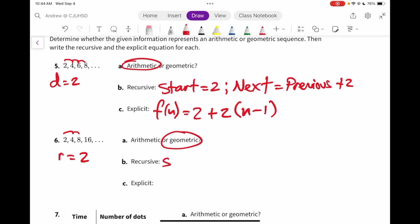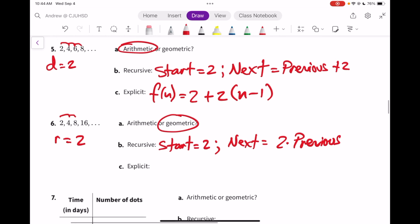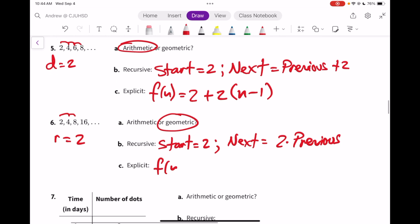The recursive, you want to say where does it start? It starts at 2. And next equals 2 times the previous. The explicit would be that f(n) equals the first number, 2, the common ratio, 2, to the n minus 1.